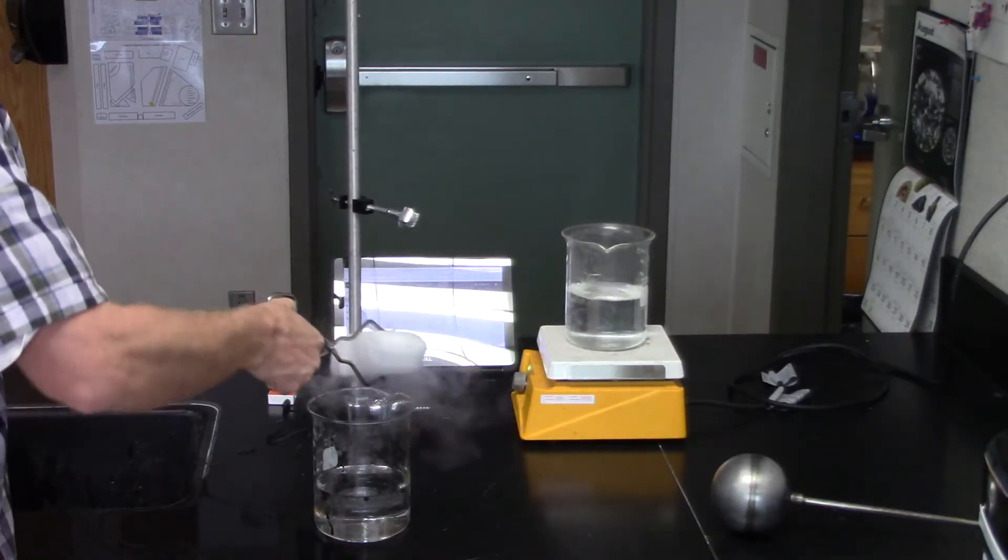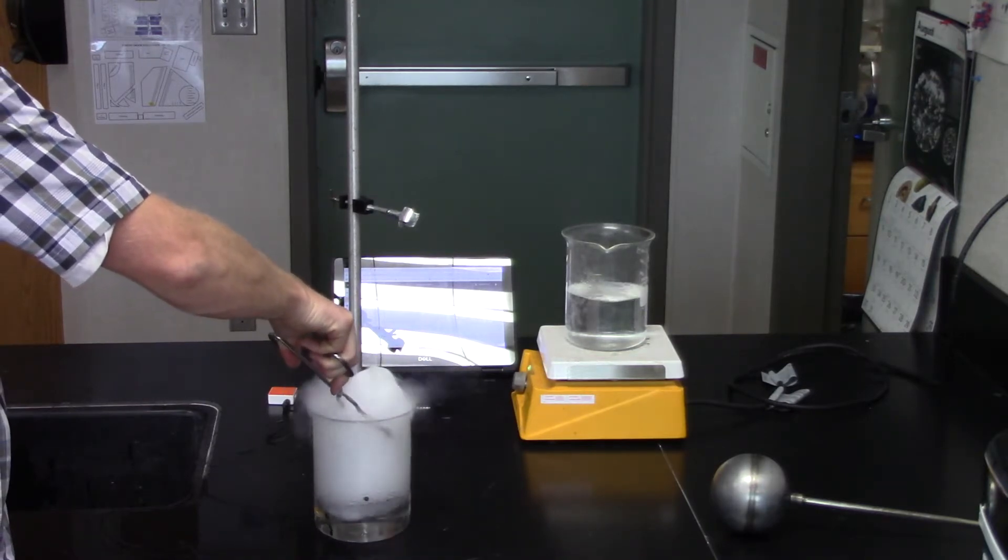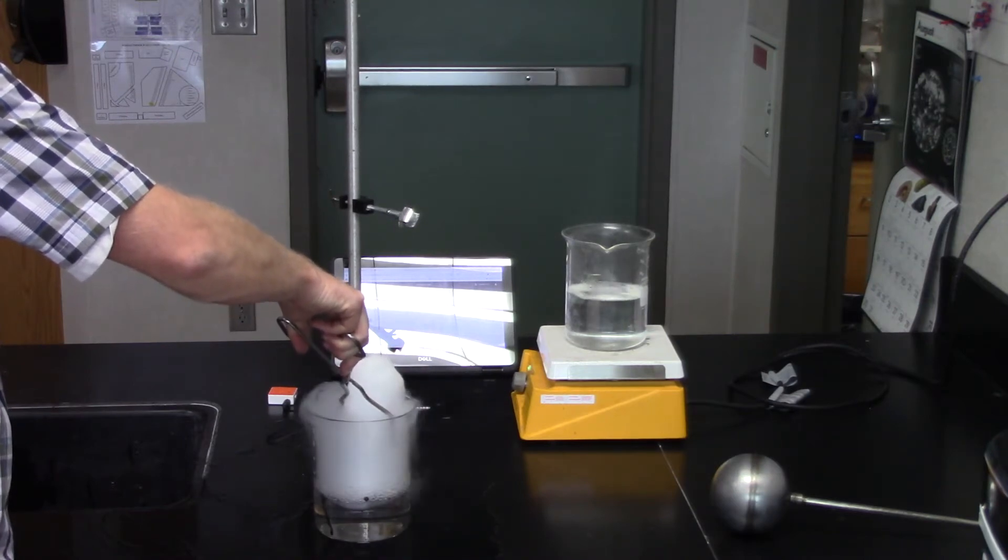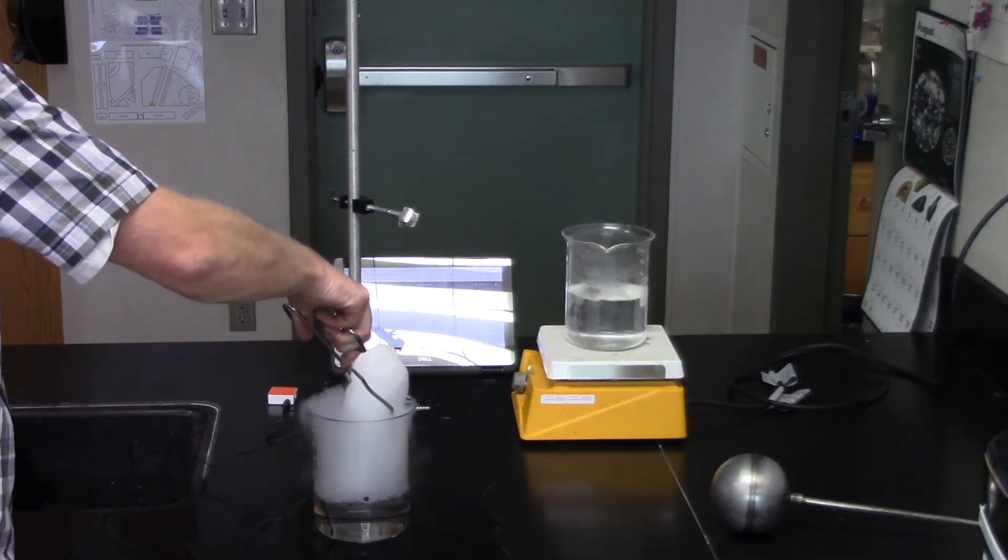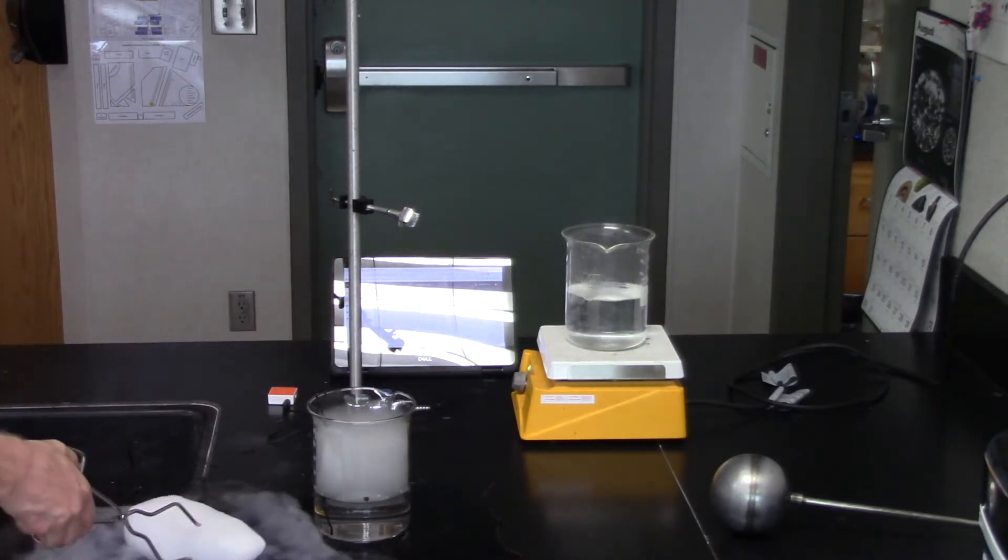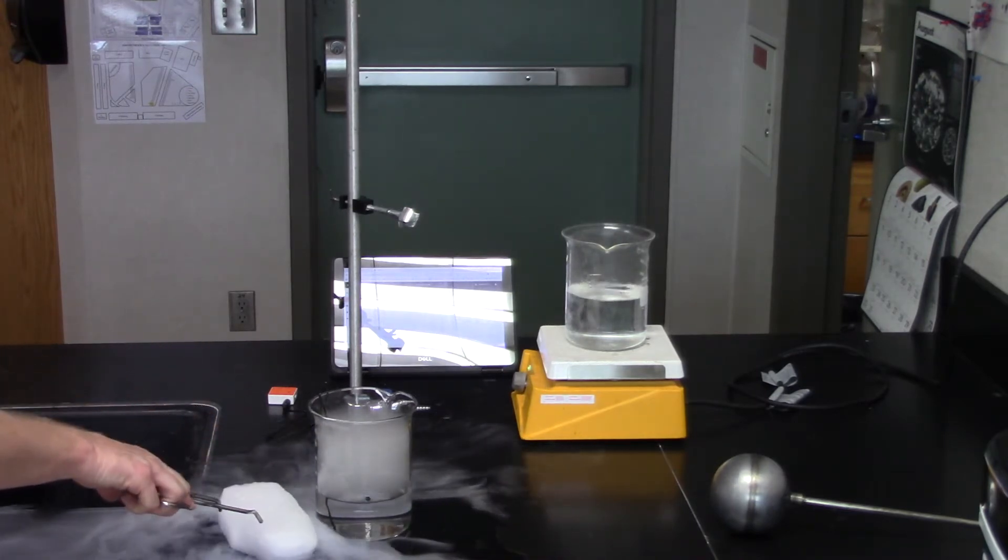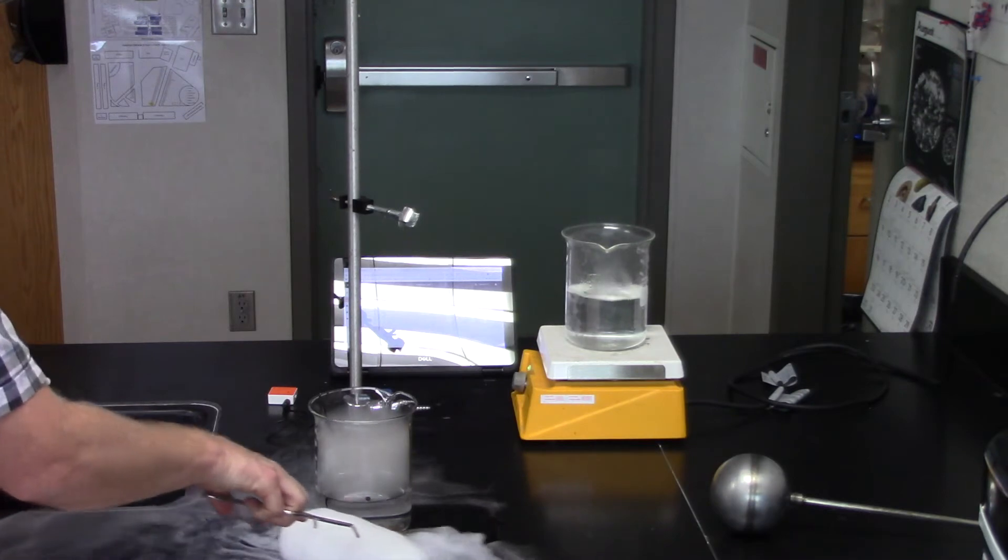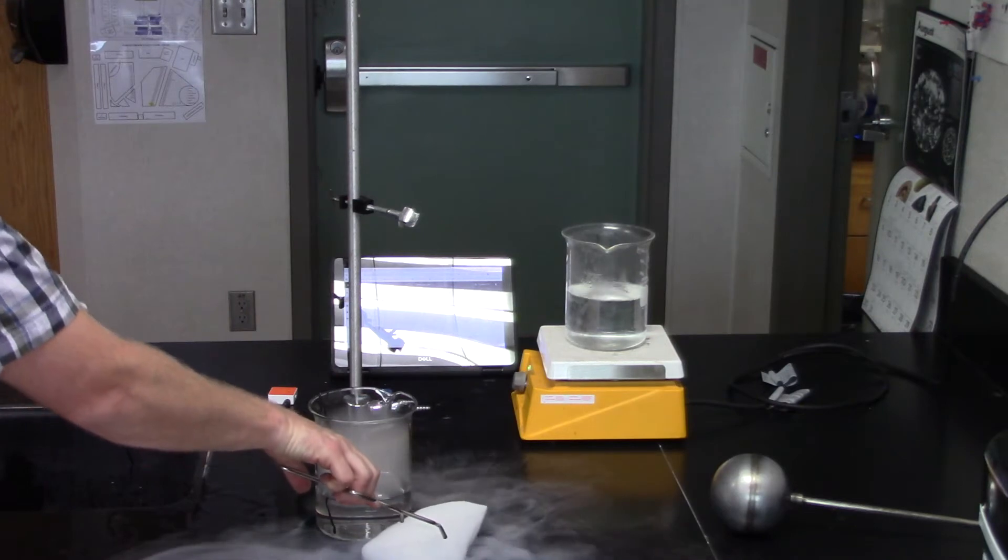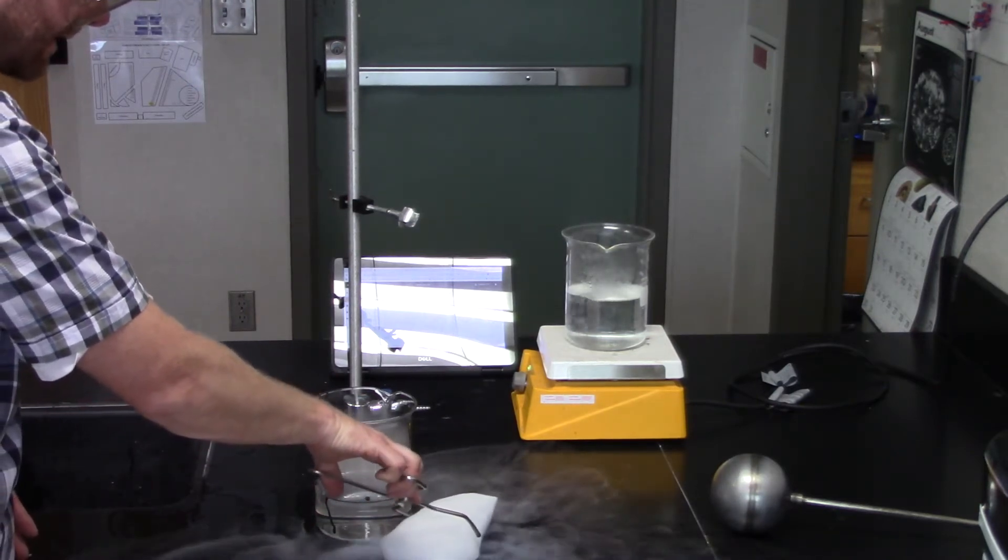All right, so now we're going to try out the dry ice. It's vaporizing. So this is carbon dioxide, it's vaporizing on the table. It's actually going through sublimation. So it's subliming, it's going straight from solid state to the gas state.